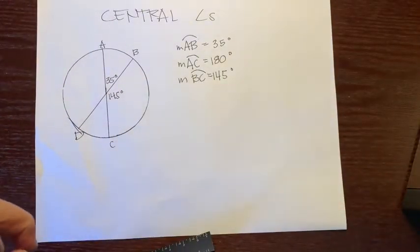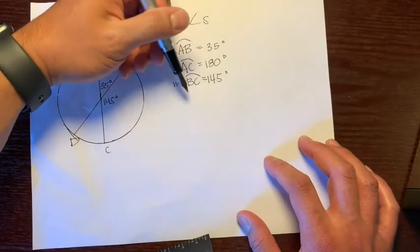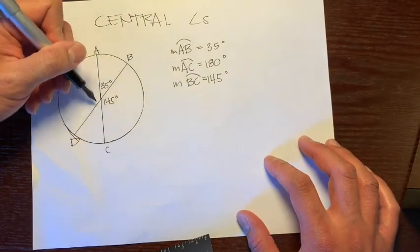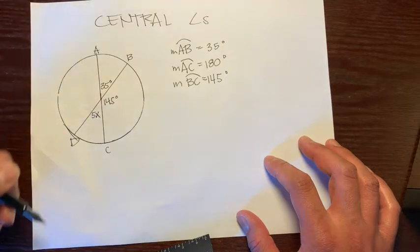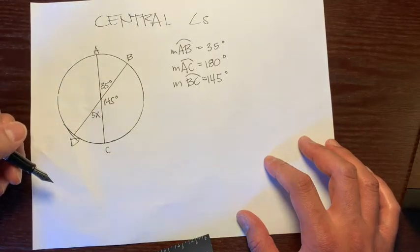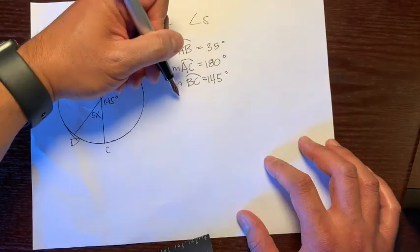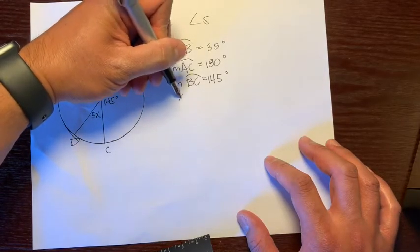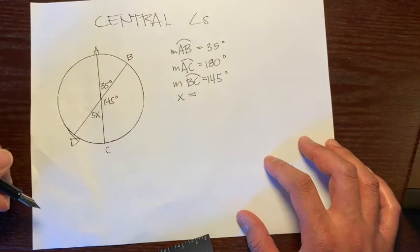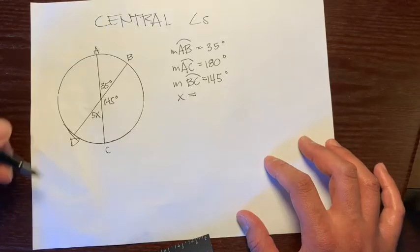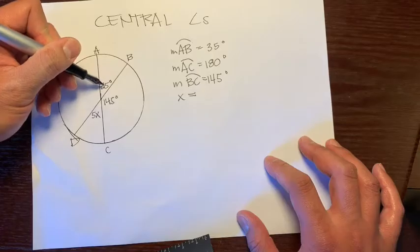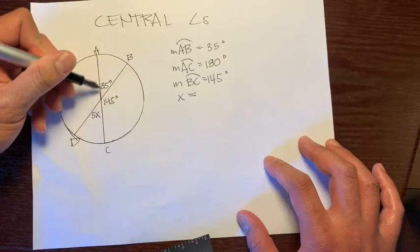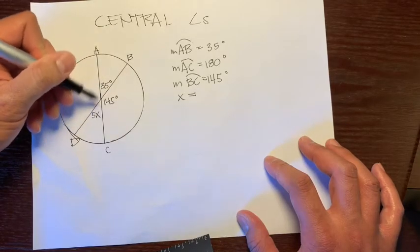And let's say the question asks, and let's call this angle 5x right here. There's a couple options. And let's say that it asked, what does x equal? So we have a few options. We can notice that this angle, the original angle 35 degrees, and this angle are both vertical. So we could set them equal to each other.